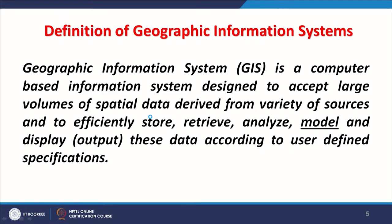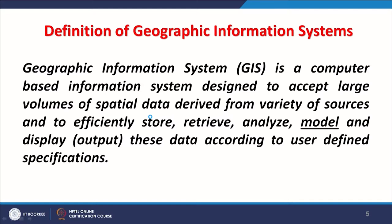GIS is a computer-based information system designed to accept large volumes of spatial data. Spatial data means data which has its geographic location — spatial data always has its own location. For example, this room in an e-learning center can be assigned a very specific location. Even within this room, different objects including myself can be given a unique ID and coordinates, making me also a spatial object.